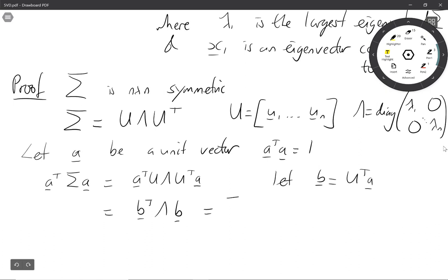And because Λ is a diagonal matrix this is just the sum from i equals 1 up to n of λᵢ bᵢ squared where bᵢ are the components of vector b.